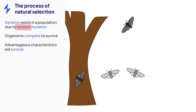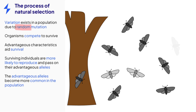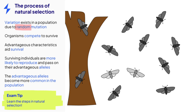The dark moths are more likely to survive and reproduce, passing on alleles for dark colour. Over many generations, the dark allele becomes more common, and most of the moths in the population are dark in colour. You should learn these steps in the process of natural selection, as this topic often comes up in exam questions.